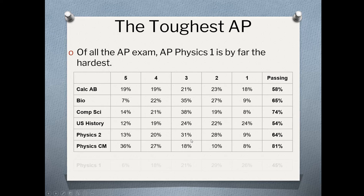For AP Physics 1, on the other hand, it's 6% fives, 18% fours, 21% for three, and altogether, 45% of the students pass.